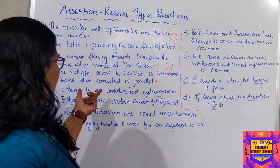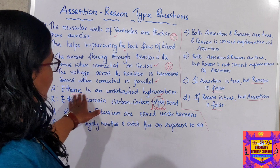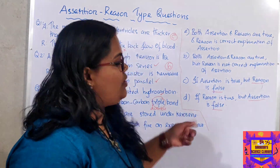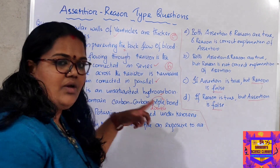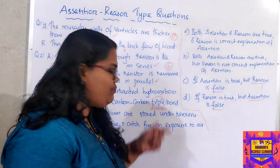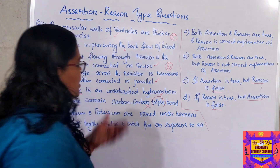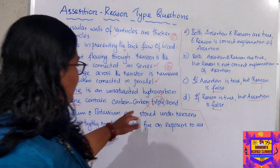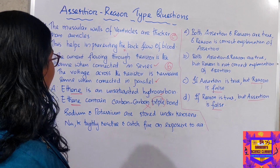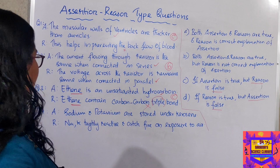If the reason had said double bond, both statements would be correct and it would be the correct explanation — option A. Because if it has a double bond, you can say it is an unsaturated hydrocarbon — that would be the correct explanation. But since they gave triple bond in the reason, the reason is false. Assertion is true, reason is false — that gives us option C. So our answer here is option C, because reason is false.